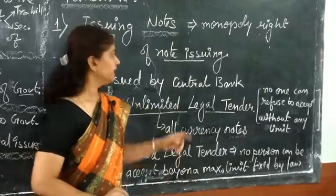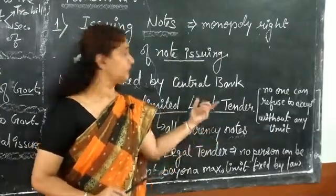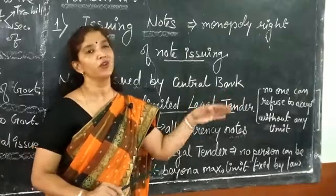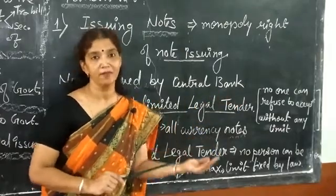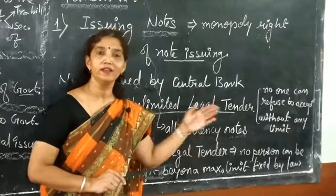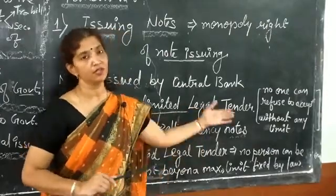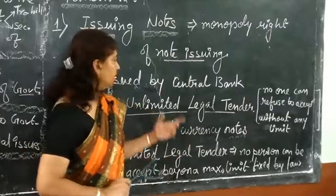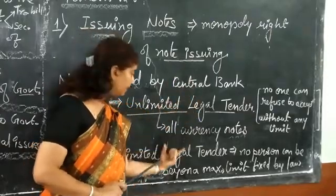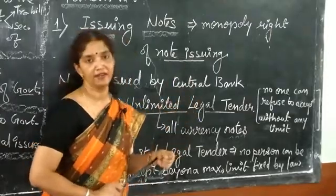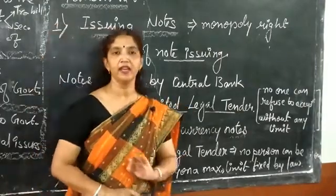If a person is paying in terms of currency — coin or notes issued by the Reserve Bank or central bank — no one can refuse that transaction. That is called legal tender. Legal tender is of two types: unlimited legal tender and limited legal tender.